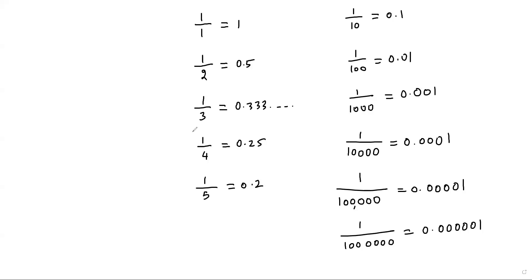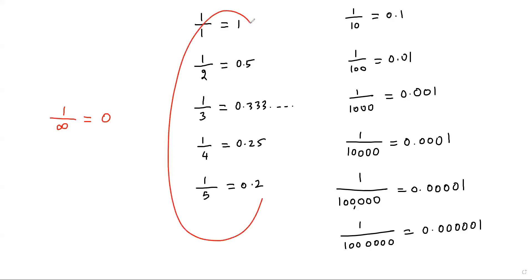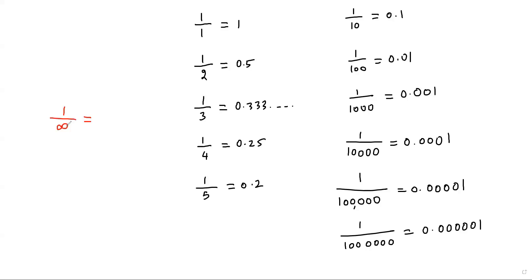When you take a very large value as a divisor for one, the value of the fraction gets closer to zero. In this way, when I divide one by a very large infinite value — say infinity — the result is zero. It is very clear that whenever you divide a number by a very large infinite value, it results zero, because in a fraction, if the denominator is increasing, the value of the fraction decreases. So when you take a very large infinite value as the denominator, the value of the fraction is zero.